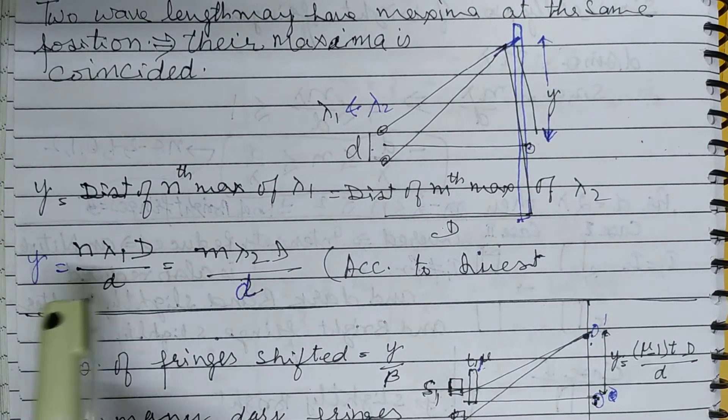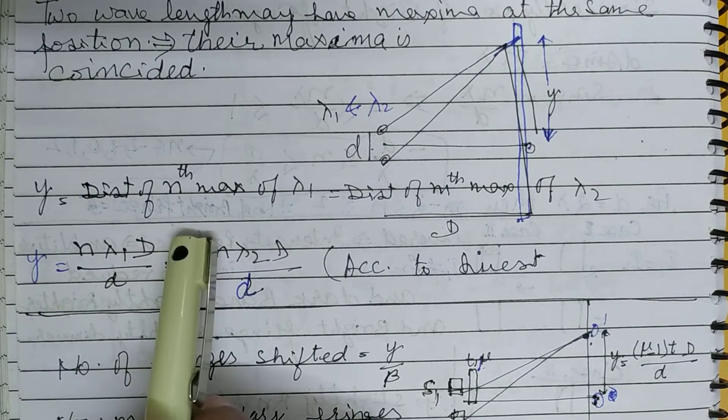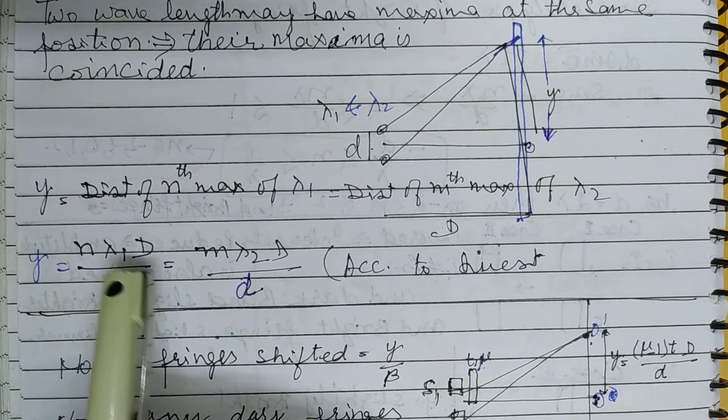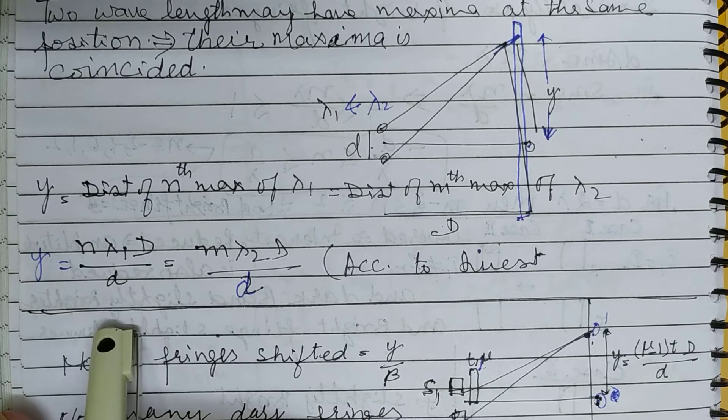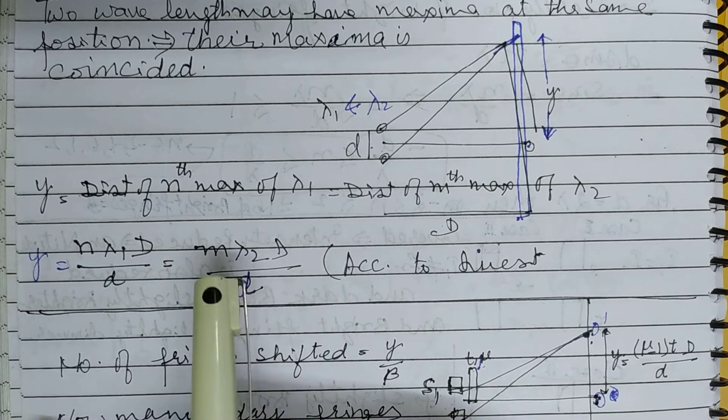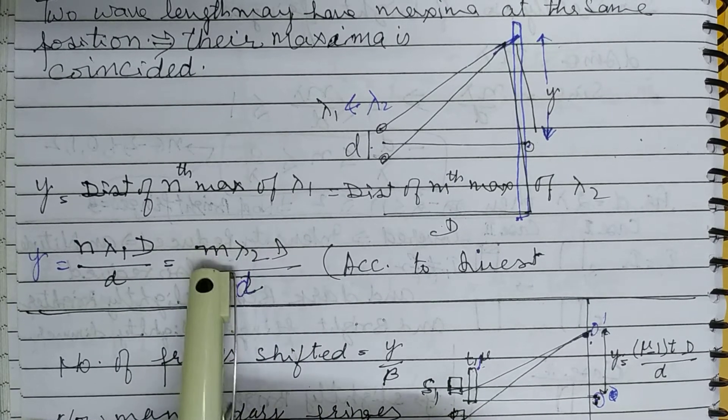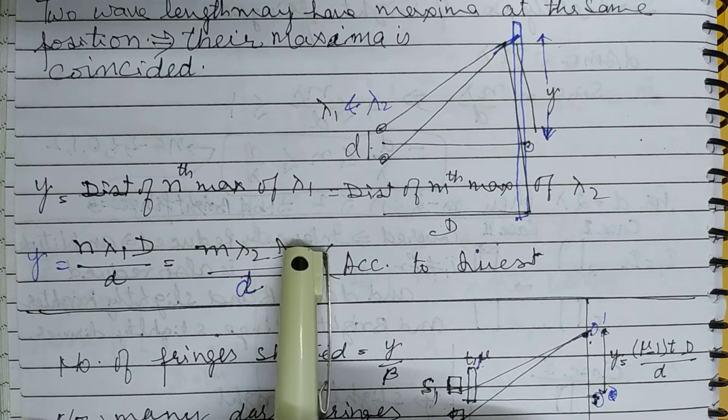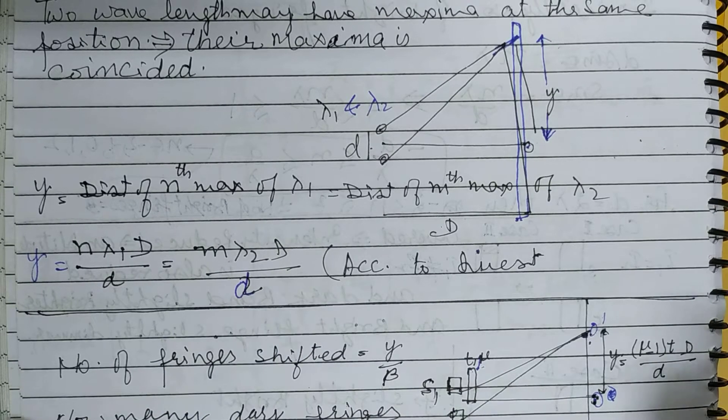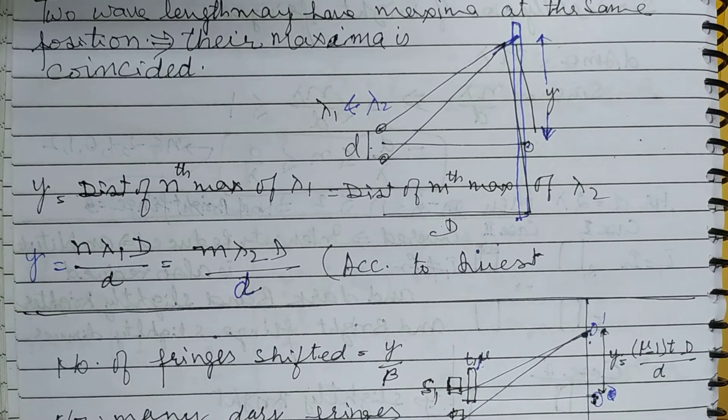The formula is n lambda 1 D by d, that is what you use here for lambda 1. And here for the second, mth bright fringe, it is m lambda 2 D by d. And both you equate. This is your answer.